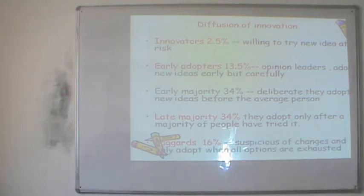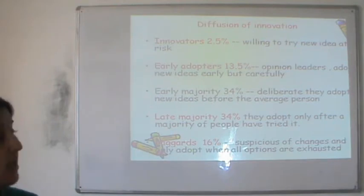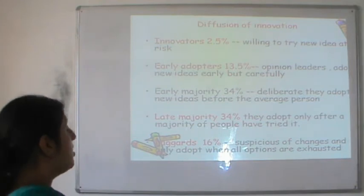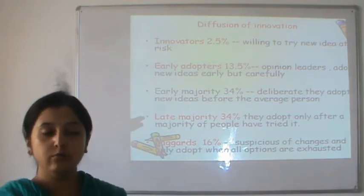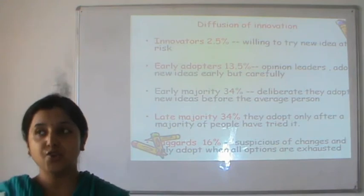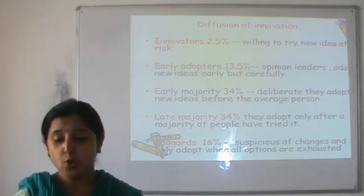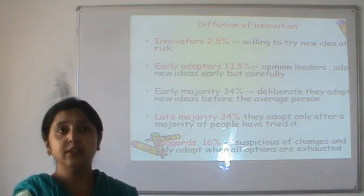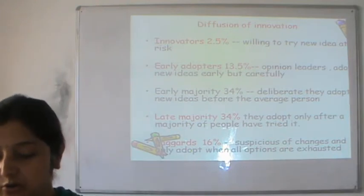Innovators are those willing to try new ideas — they are the adventurers or risk-takers. Early adopters (13.5%) are the opinion leaders who adopt new ideas but are always careful in their approach. The early majority (34%) are deliberate, practical people who adopt once they are convinced the product is good enough. The late majority buy only after they know most of the market is using it and there is absolutely no risk involved. Laggards are the most suspicious — they always want to play safe and end up being the last to adopt, avoiding even a small amount of risk.